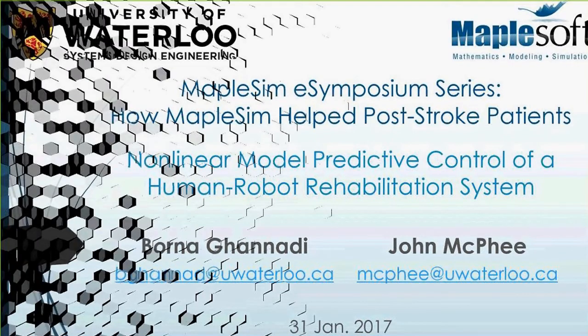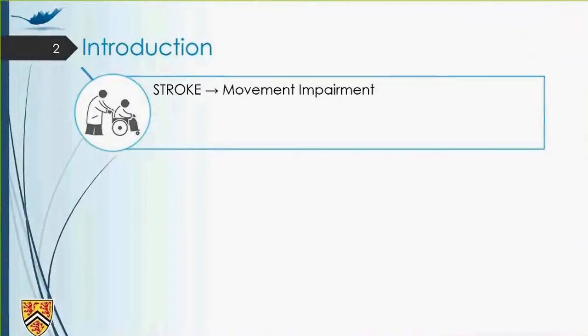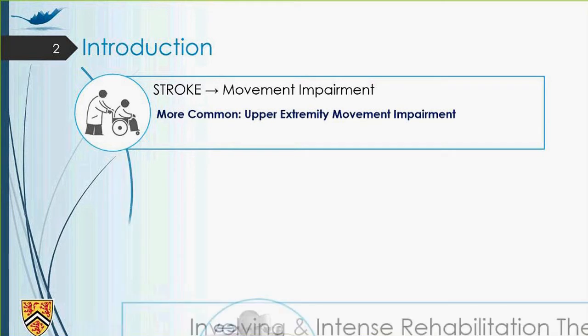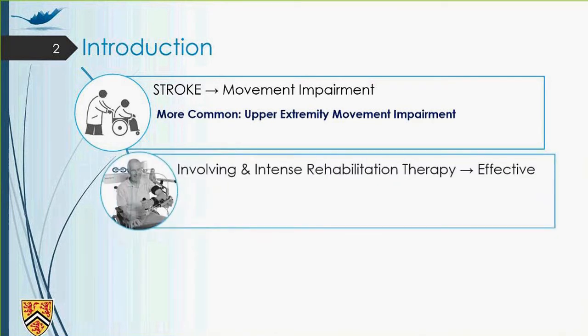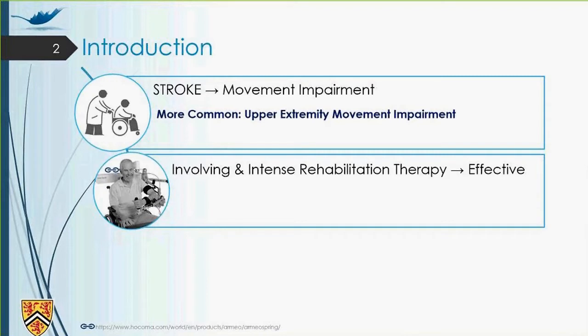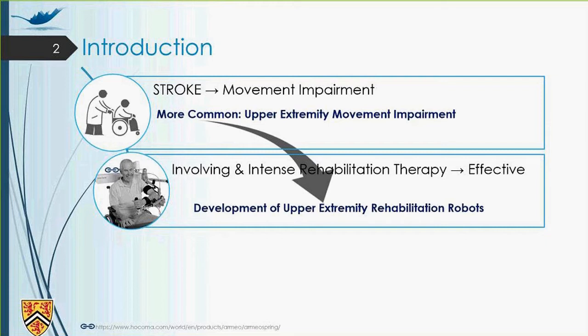Stroke is the leading cause of movement impairment, and among the movement impairments, upper extremity movement impairments are more common. Now, studies have shown that if the rehabilitation therapy is more involving and intense, it will be more effective. That's why rehabilitation robots, especially for upper extremity, have been developed to provide intensity and motivation to the post-stroke patient.